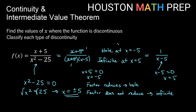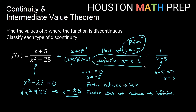So at x equals negative five, this is removable — a point discontinuity. At x equals positive five, we have an infinite discontinuity, which is non-removable.